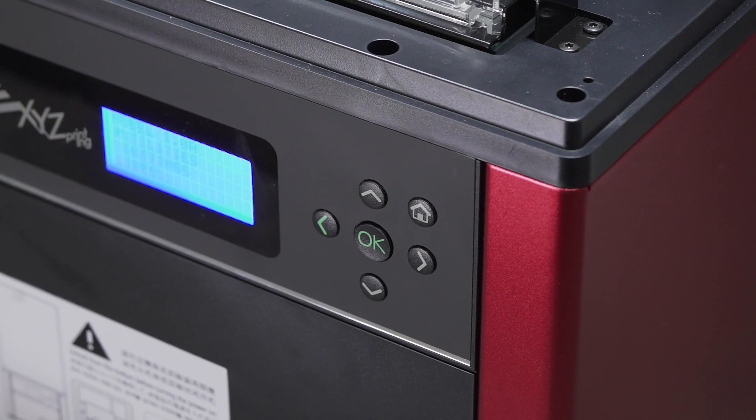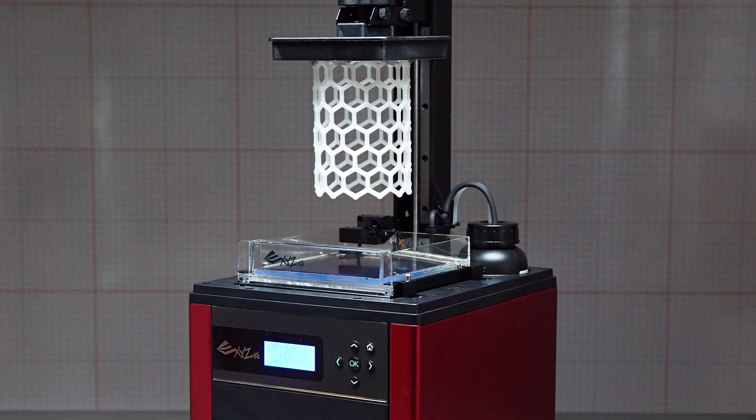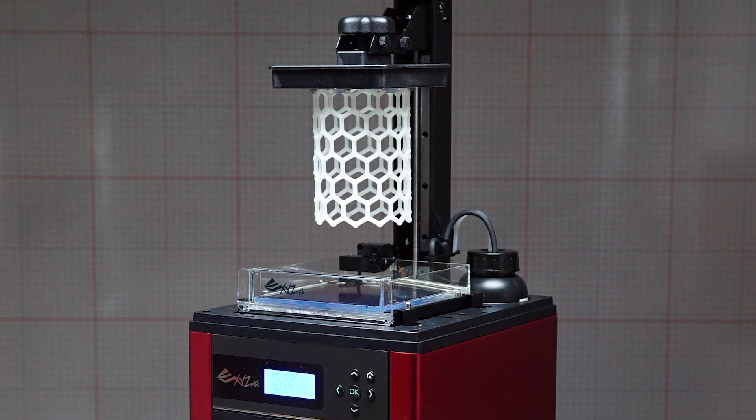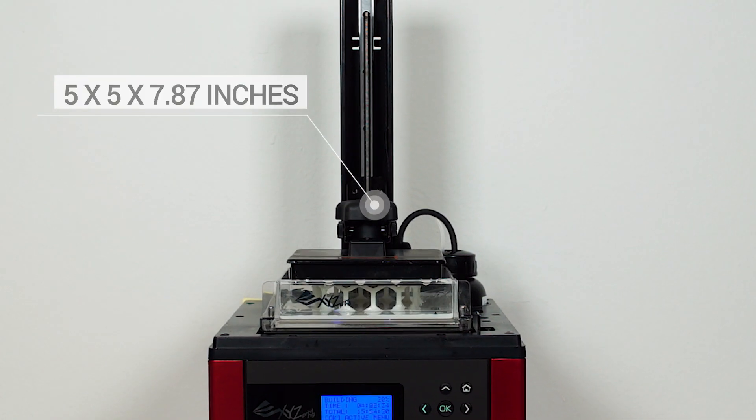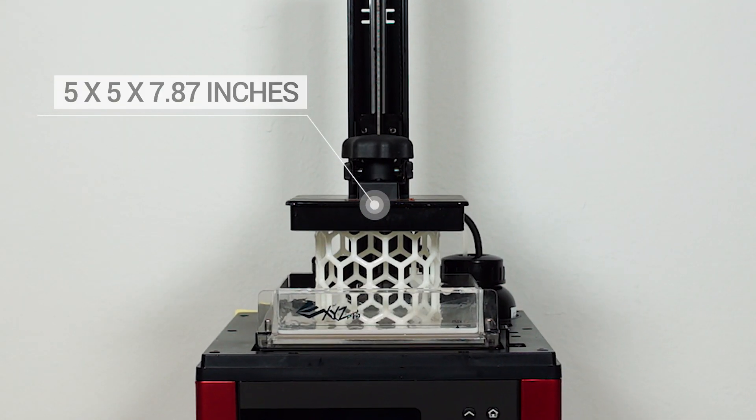Another great thing about the Nobel is the height that you can print. It's one of the largest on the market right now. The building platform is 5 by 5 by 7.87 inches.